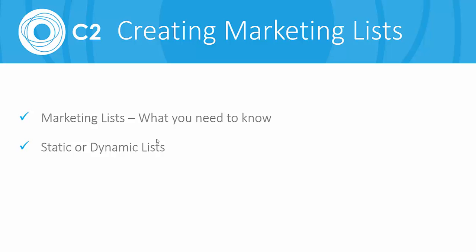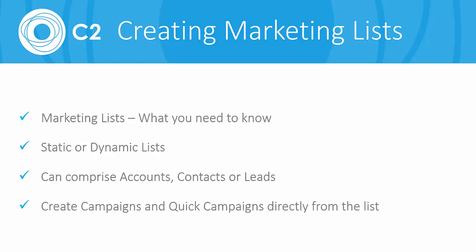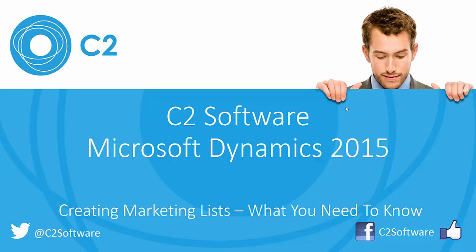To recap: in this video we've covered what you need to do with marketing lists, discussed static versus dynamic lists, shown that a list can comprise accounts, contacts, or leads, and created both a campaign and a quick campaign directly from our lists. That concludes this tutorial. If you want any other information from C2, click the box below. If you enjoyed the video, give it a thumbs up, and follow us on Twitter or contact us on Facebook — we'll be more than happy to help. Thanks for listening.